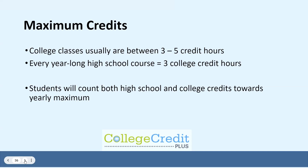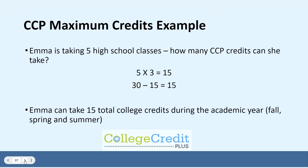Let's look at an example. Emma is taking 5 high school courses. Since a high school course is worth 3 college credits, we'll multiply that number by 3. So 5 classes times 3 credits equals 15 credit hours. Emma has 30 hours available for the entire year. So we take out the 15 hours she's doing in high school, and now we see that she can take a total of 15 credits during that academic year, starting with the summer term and followed by the fall and spring terms.